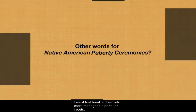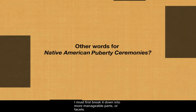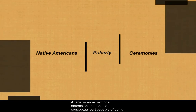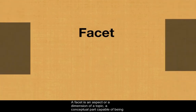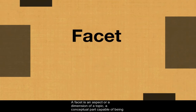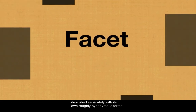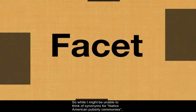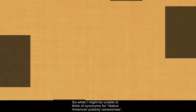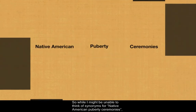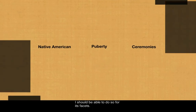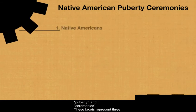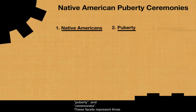In order to search a topic like Native American puberty ceremonies, I must first break it down into more manageable parts, or facets. A facet is an aspect or a dimension of a topic — a conceptual part capable of being described separately with its own roughly synonymous terms. So while I might be unable to think of synonyms for Native American puberty ceremonies, I should be able to do so for its facets. For this topic, I have three facets: Native Americans, puberty, and ceremonies. These facets represent three parts of my topic.